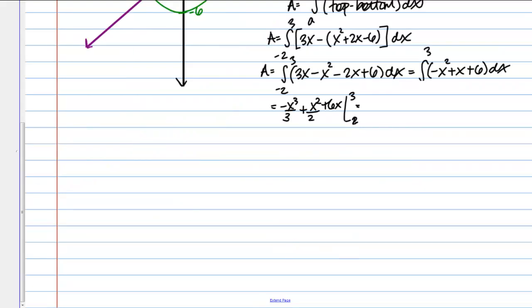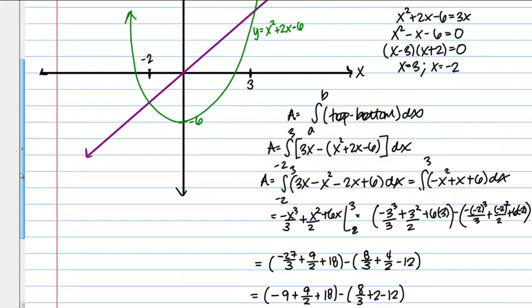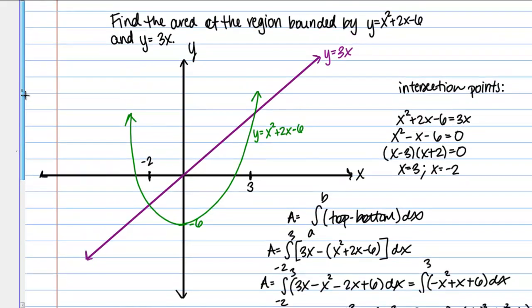So if we go ahead and plug in 3 first we should get the following, and then we plug in negative 2 as well. And we're subtracting those. And then we'll just go through several steps to simplify this. And of course you could do these in your calculator. And we should get the following. So it looks like after working out all those values and fractions, we end up with 125 over 6 as our final answer for the area bounded by these curves.